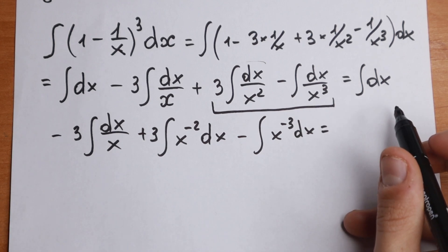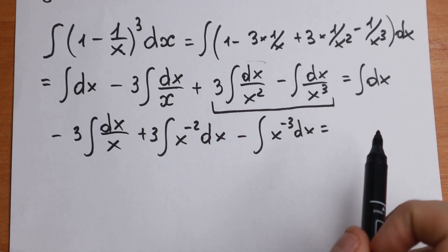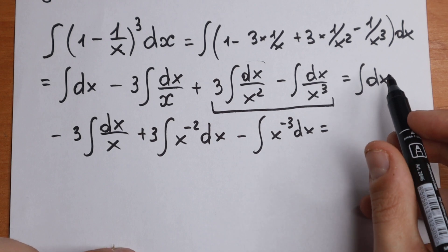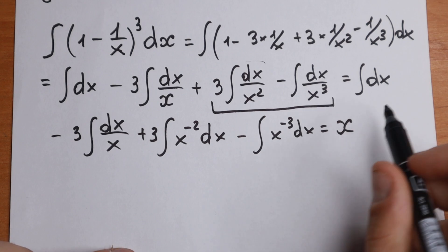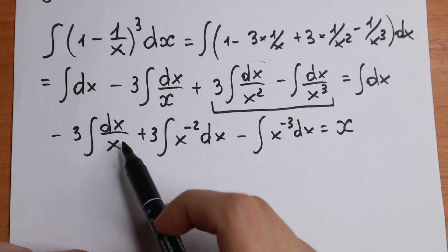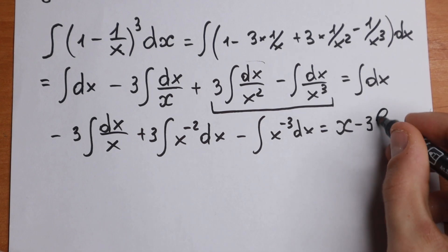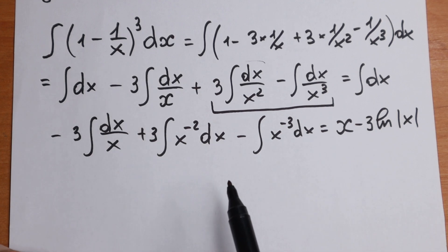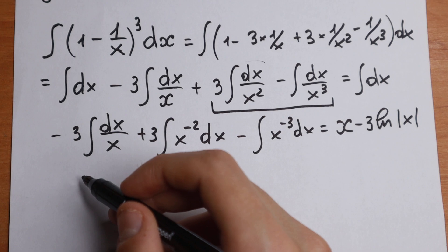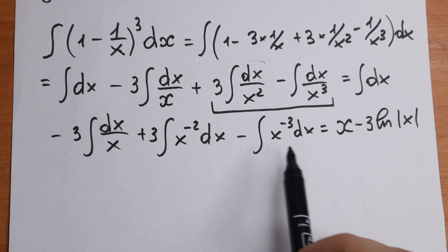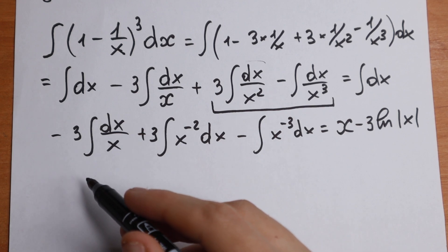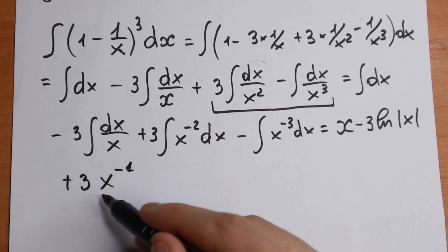You can see there are many table cases here. Integrating each term: the integral of dx gives x. Then minus 3·∫(1/x)dx gives -3·ln|x|. For plus 3·∫x⁻² dx, we add 1 to the power and divide by the new power, giving plus 3·x⁻¹/(−1).